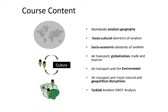The course includes the following elements. Aviation geography — we'll be looking at aviation from different points of view on the world map. We'll be looking at the socio-cultural element, for instance what is the main language used in aviation, and the economics element — how is aviation influencing the economy?